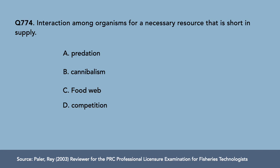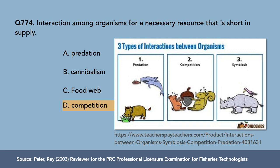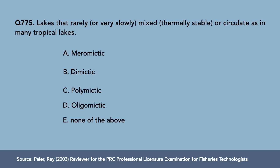Question 4: Interaction among organisms for a necessary resource that is short in supply — A) predation, B) cannibalism, C) food web, D) competition. The correct answer is letter D, competition. There are three types of interactions: predation (predator and prey), competition, and symbiosis (e.g., mutualism and commensalism). When a resource like food or space is limited, organisms compete — hence the answer is competition.